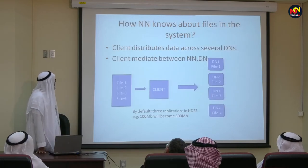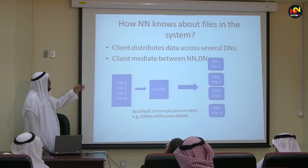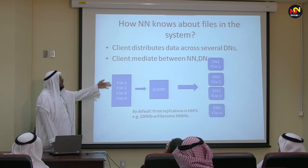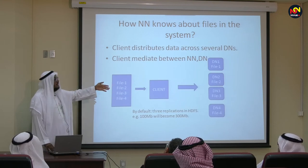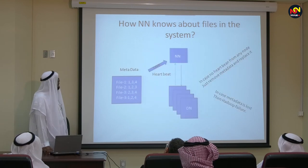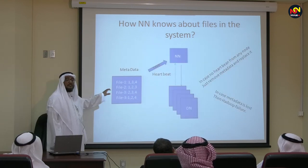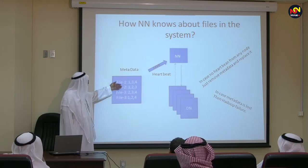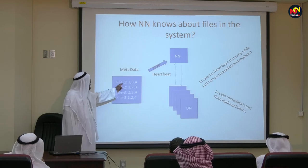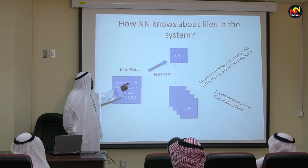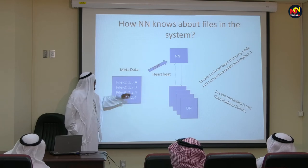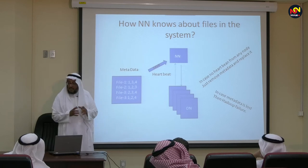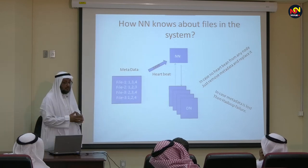The client distributes the job to the Data Nodes. You have files 1, 2, 3, 4, 5 — you distribute them. The Name Node will keep the metadata: file 1 is on data nodes 1, 3, 4; file 2 is on nodes 1, 2, 3 — something like that. We know where these blocks of data or files are stored. This technology is based on dividing the file itself into blocks — the minimum being 64 megabytes — and these blocks are redundant; you can make them redundant by replicating them.